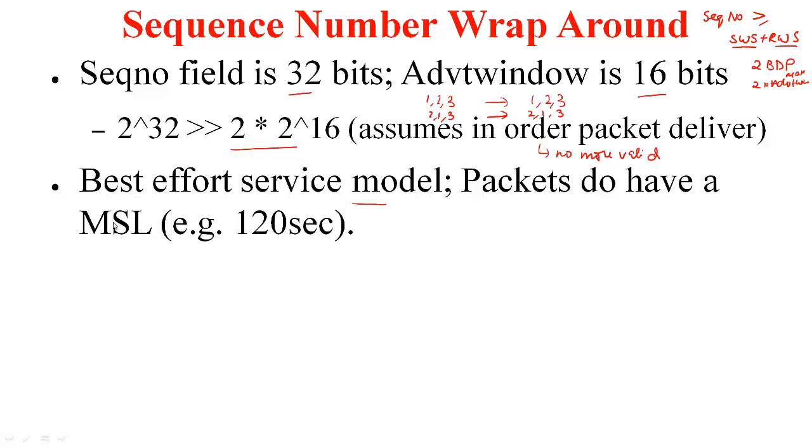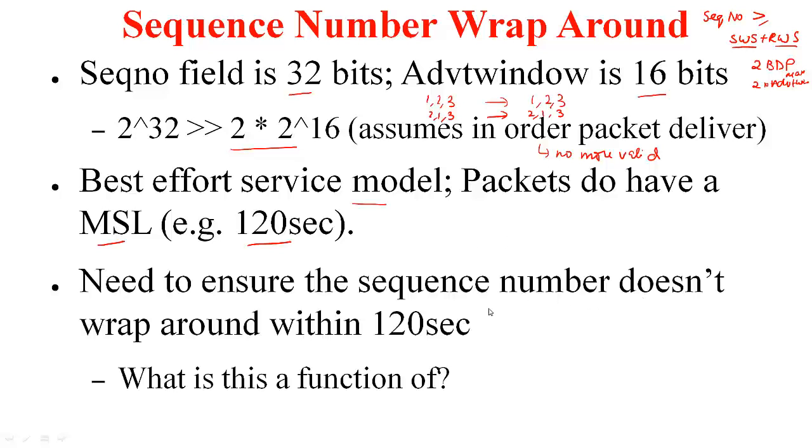Thankfully, the packets do not live in the internet forever. There is a maximum segment lifetime. We normally assume this equal to 120 seconds. Given this, what do you need to do to ensure that there is no confusion at the receiver? Basically, you need to ensure that this sequence number space doesn't wrap around within this 120 seconds.